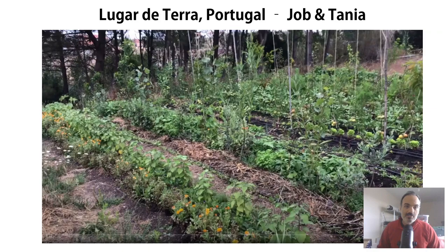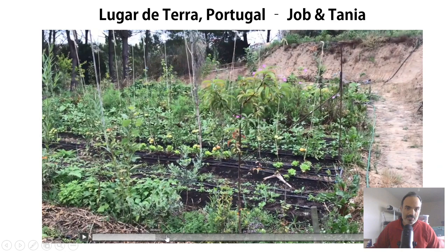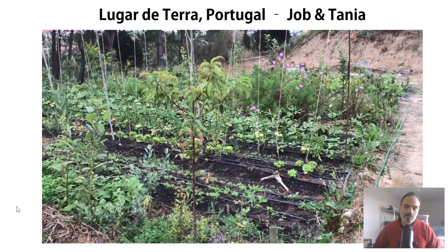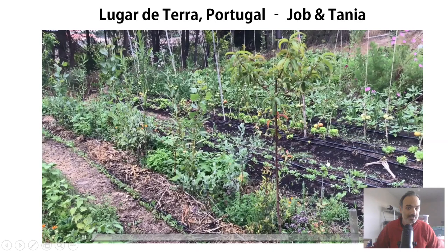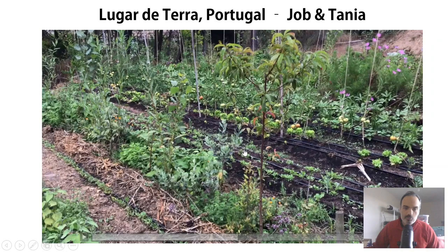Moving on to syntropic systems, which are complex to explain fully. Looking at Terra Job and Tanya's farm in Portugal — a very young system where trees have been planted on perennial rows with very few vegetable beds in between, which will eventually also become agroforestry beds. The idea is very syntropic and successional: in each bed you plant all layers and life cycles — vegetables, herbs, shrubs, fruit trees, and very tall emergent layer trees for shade, biomass, timber, and prunings.